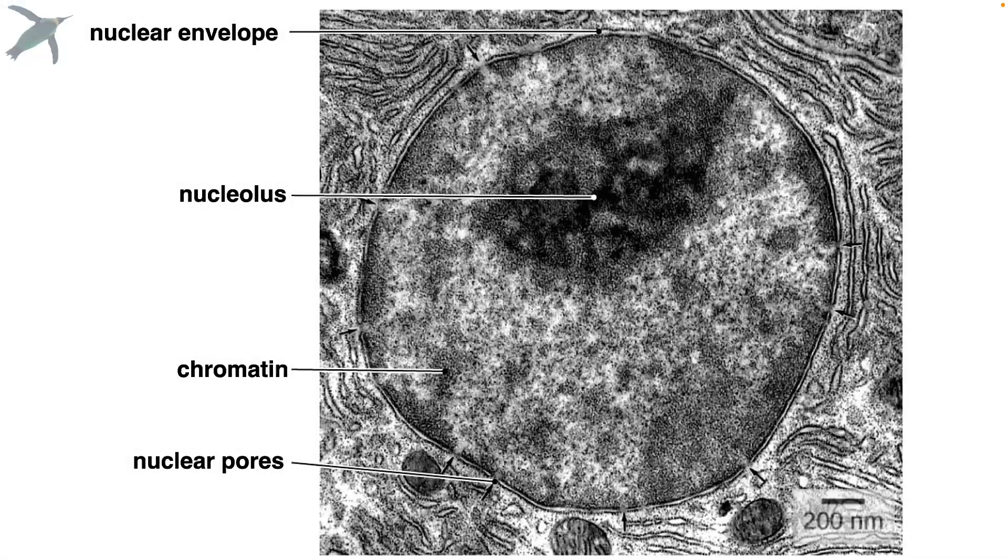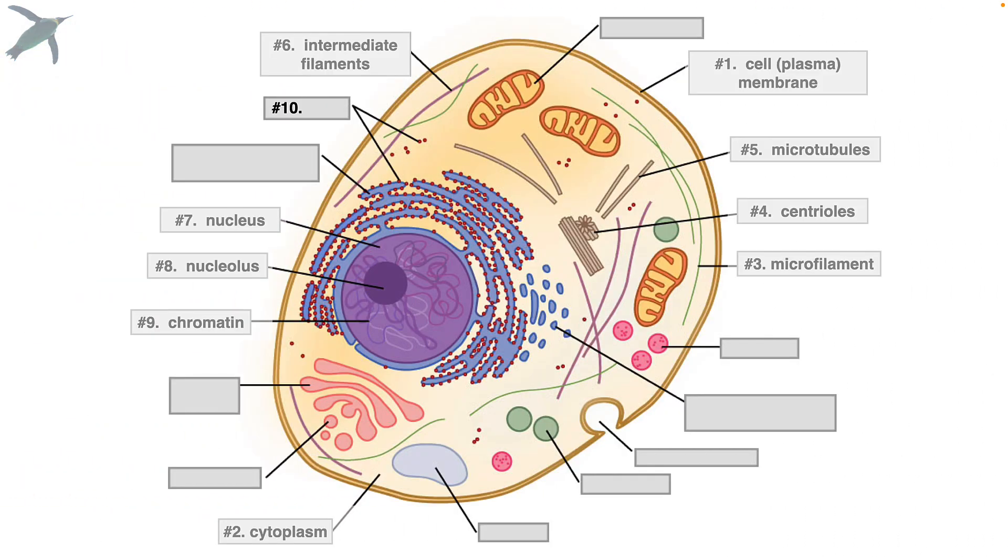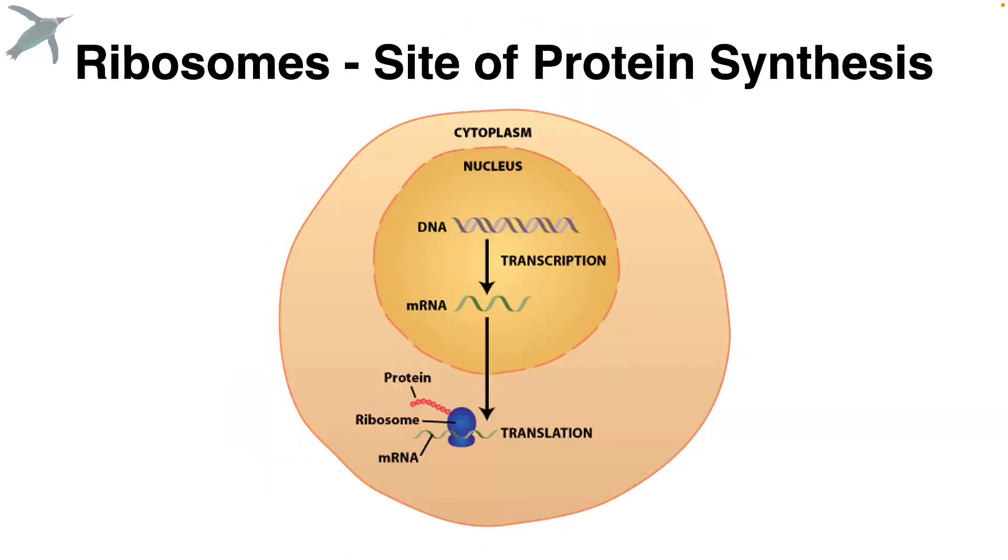Next, we have this nucleolus. This is the darkest staining region, and that's actually where ribosomal RNA is made. We're going to talk about ribosomes next, so hang tight. But first, I wanted to show you this transmission electron micrograph of an animal cell nucleus. It's so pretty. Okay, next, where are proteins made? Do you remember those? Okay, shown here as the little red dots. Those are ribosomes.